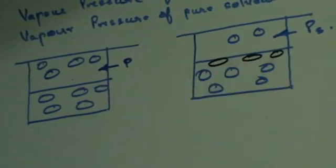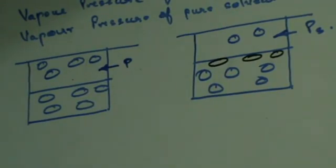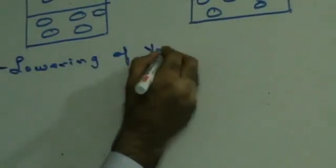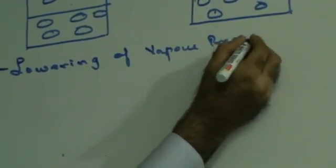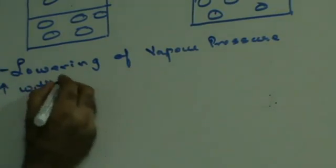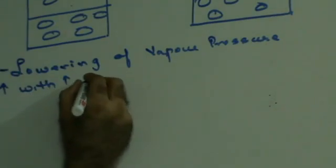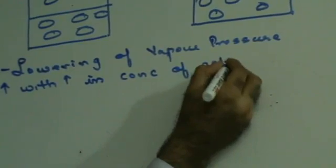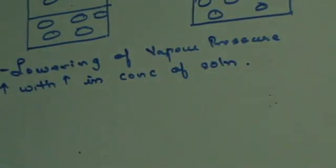The surface area available for solvent molecules would go on decreasing as the concentration of the solution increases. Because as the concentration increases, there would be more solute present, and therefore a larger part of the surface area would be covered by the solute. So I can say that lowering of vapor pressure increases with increase in concentration of solution.